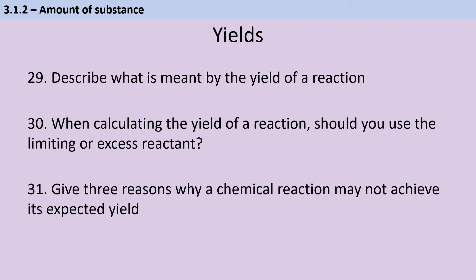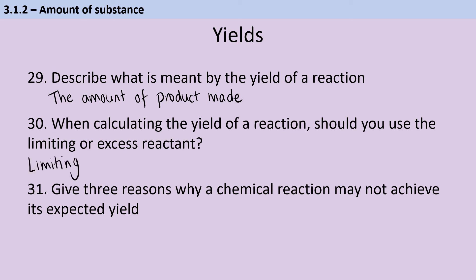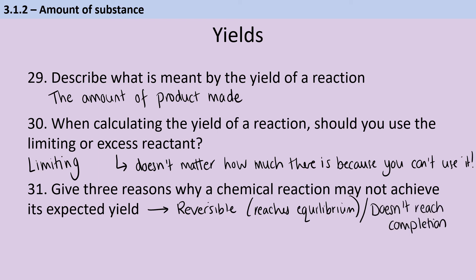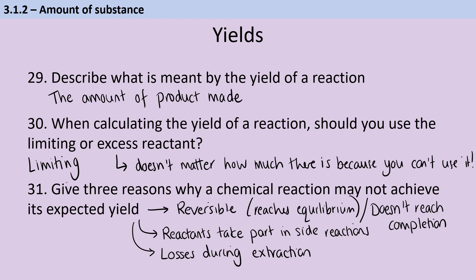The yield of a reaction is the amount of product made. When working out the maximum theoretical yield, use the limiting reactant — it doesn't matter how much excess reactant there is, if it has nothing to react with it can't influence the yield. A reaction may not achieve its maximum theoretical yield if it's reversible and reaches equilibrium rather than going to completion, or if the reaction is slow and doesn't reach completion. It's also possible for reactants to undergo side reactions, or for sufficient product to be made but lost during extraction — for instance, product left in pipes or reaction vessels in industrial processes.